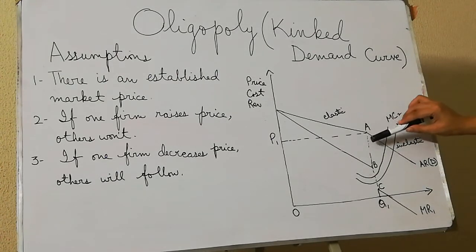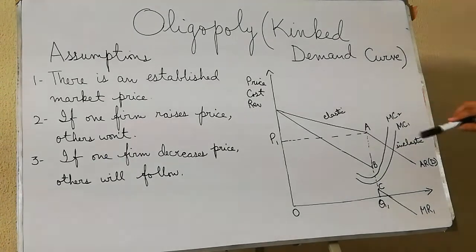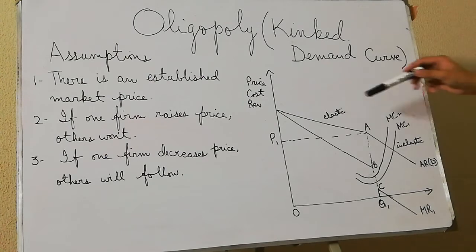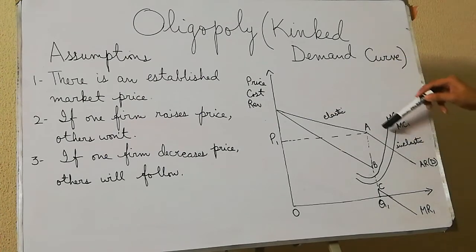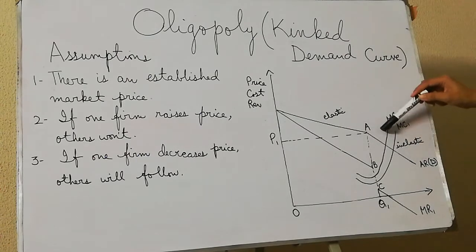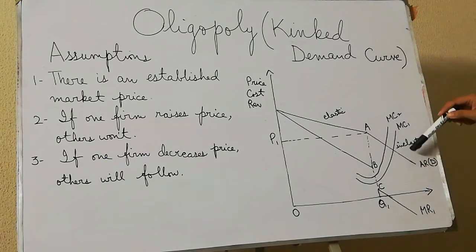Below P1, if any firm decreases its price, a lot of other firms will also follow the same strategy. So the firm that decreased its price is not going to benefit, because the rest of the firms will also reduce their price. That is why we have two different types of demand curves — one elastic and one inelastic.